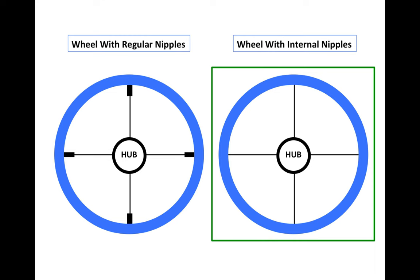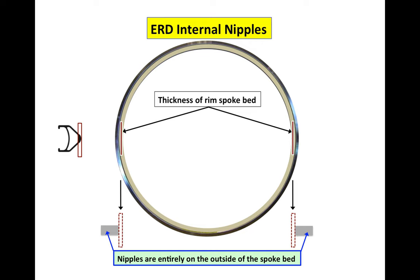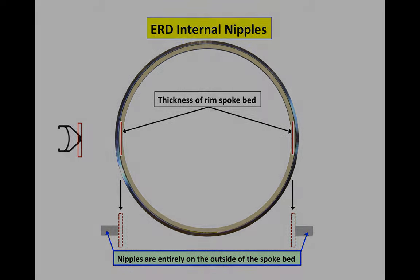But there are many wheels where the nipples are internal and are hidden, and we have to know how to calculate ERD in that case as well. In this case, the nipples are going to be entirely on the outside of the spoke bed. None of the nipple will come through the spoke bed.